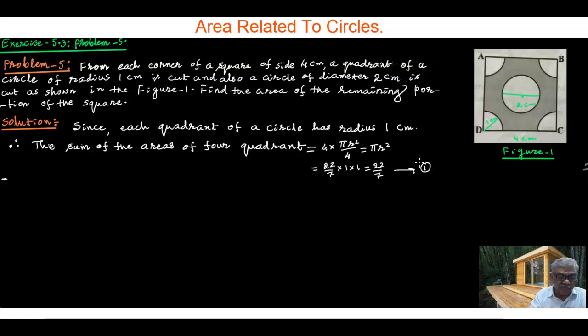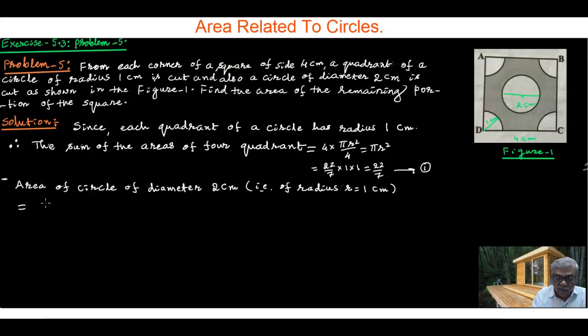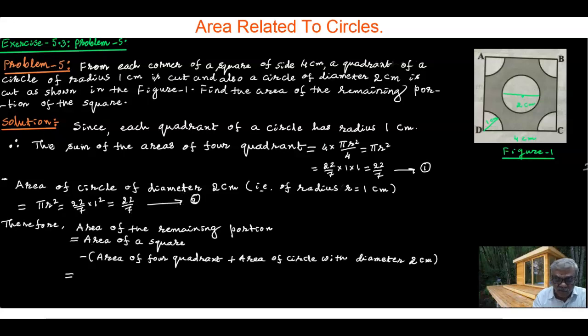equals πr², which is 22/7 × 1², which is again 22/7. Let me call this equation 2. Therefore, the area of the remaining portion equals...